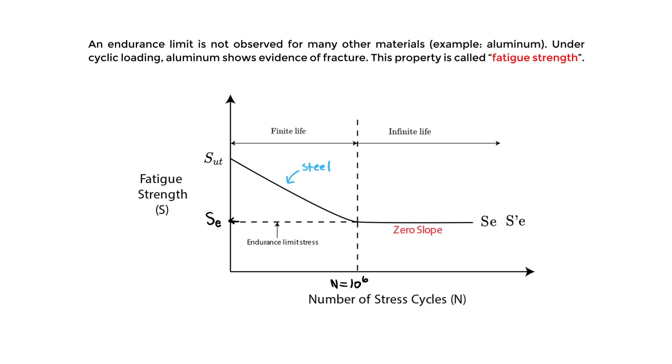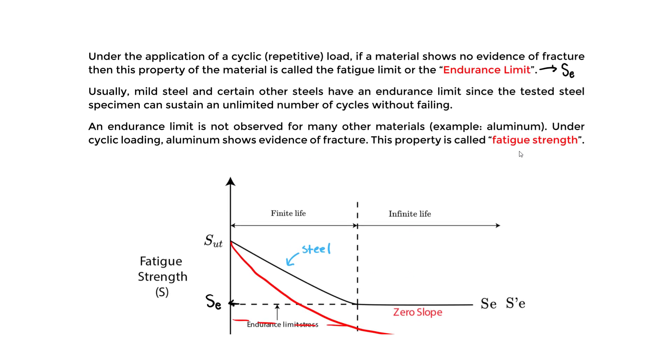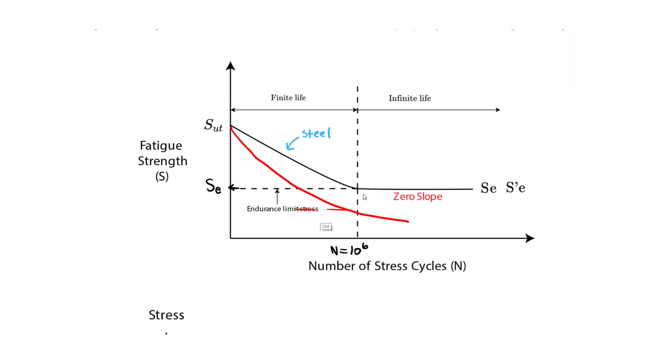But once again, for aluminum and non-ferrous metals, it would look something like this. We start here, we go down, down, and we do not hit that flat slope. We keep going down like that. We don't go flat. If you do not go flat, you have no endurance limit because it just keeps going down. Here what we would actually define is the fatigue strength - we experience cracking or fracture in this case for aluminum.